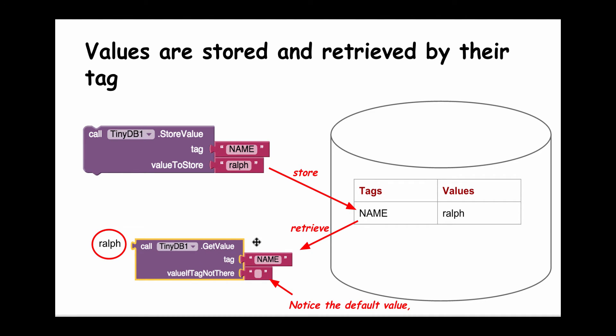You need to give it the tag that's associated with the data you stored in the database. So if I want Ralph, I need to provide the tag NAME here. It has to be identical to the tag you used when you stored the data. Notice the default value. This default value is what this block will return if it looks for NAME and doesn't find it in the database—it'll return the empty string.